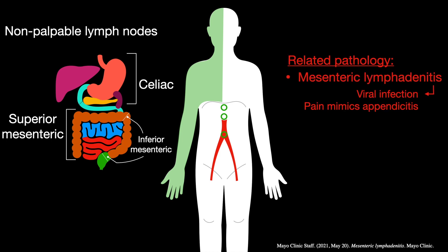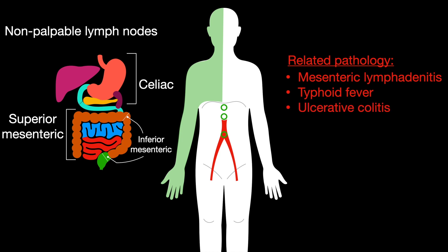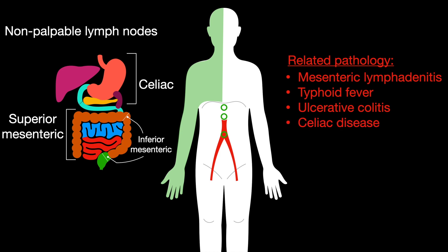The cause of mesenteric lymphadenitis is often a viral infection, and the associated pain mimics that of appendicitis. Typhoid fever, caused by the bacterium Salmonella typhi, is spread through water. Ulcerative colitis is often presented as left-sided abdominal pain, hematochezia — which is bloody stools — and fever. Celiac disease causes autoimmune destruction of the intestinal villi in response to gluten.